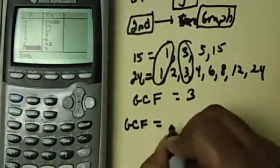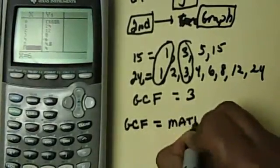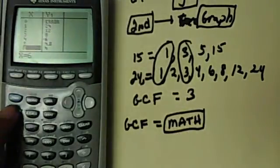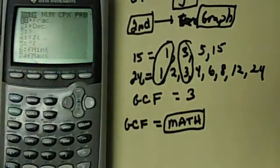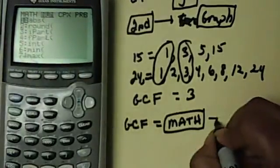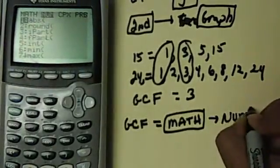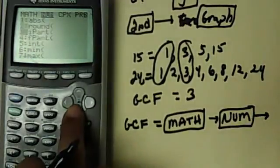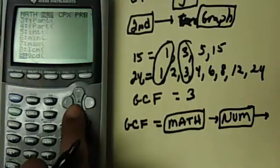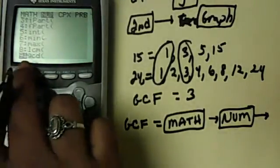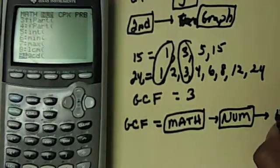You're going to hit the math button, which is right under the alpha key, 3 down. Now, you're going to go over, you have to hit the over button to go over to number. And then you can just scroll down here, and you see GCD, which is the same thing as GCF. Right there, number 9. So you're going to hit number 9.